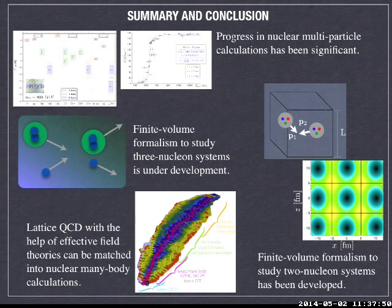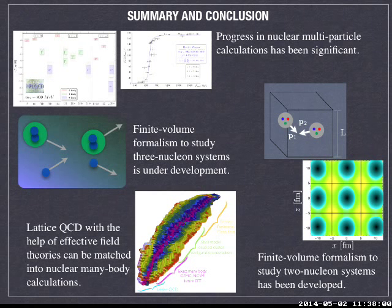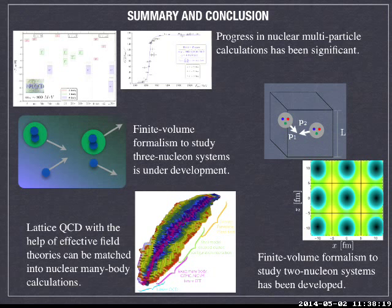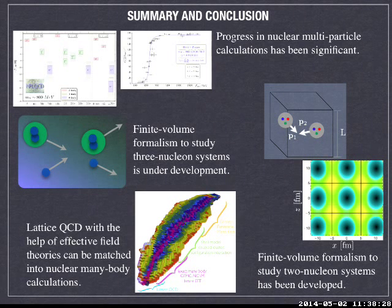Lattice QCD is not going to be able to determine the whole landscape of nuclear physics, but only for the first few nuclei. If you're able to constrain the force parameters in this sector, then you can match those to nuclear many-body calculations for low-mass and medium-mass regions, and then to heavier nuclei — systematically building up the nuclear landscape based on QCD input. In summary: the progress in multi-particle calculations has been significant in the nuclear sector in recent years. Finite volume formalism for studying two-body systems has been developed and investigated well. For three-body systems, it's still under development and doesn't have the same level of maturity, but various groups are working on it. Lattice QCD, with the help of effective field theories, will eventually be able to address interesting problems in nuclear physics. Thank you very much.